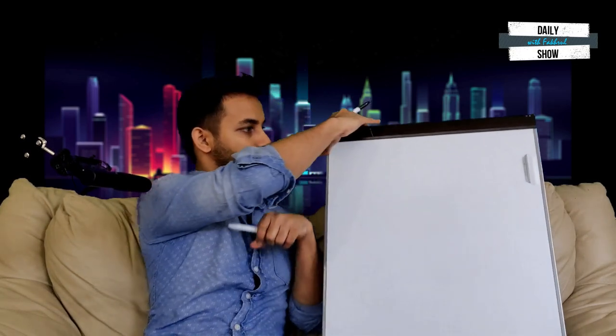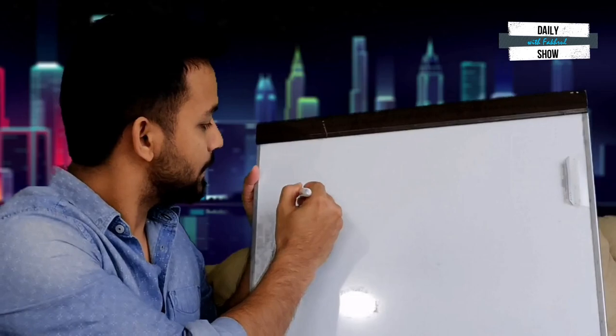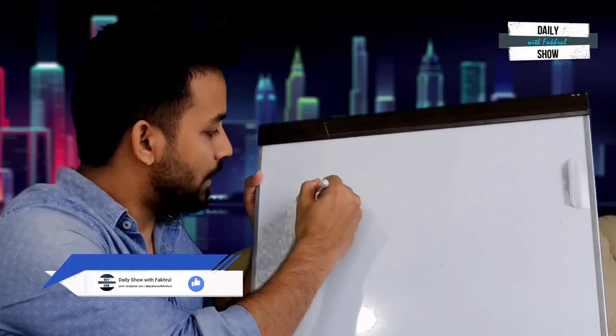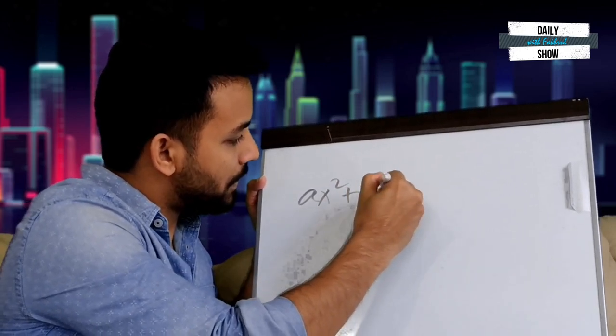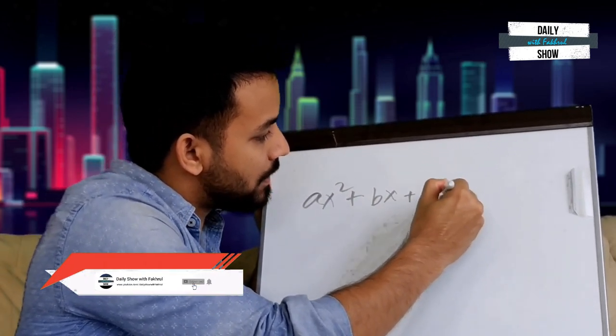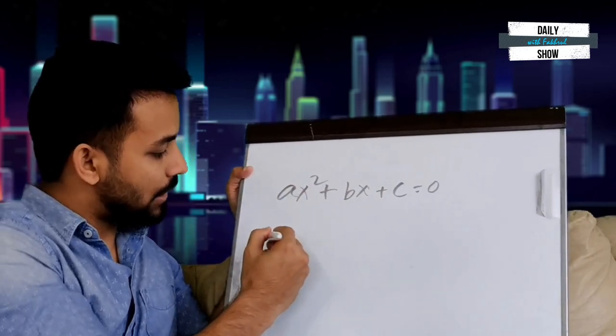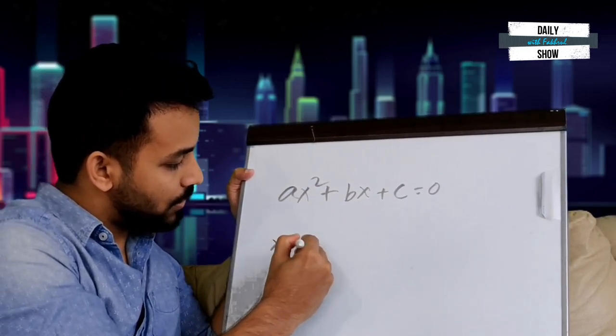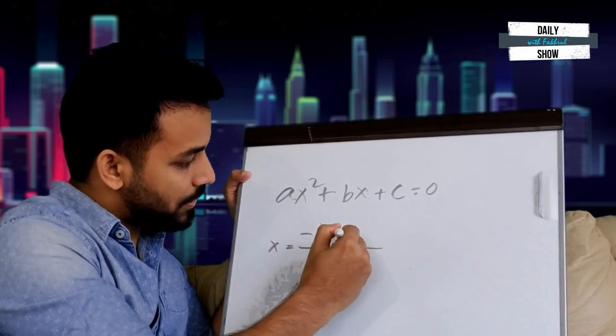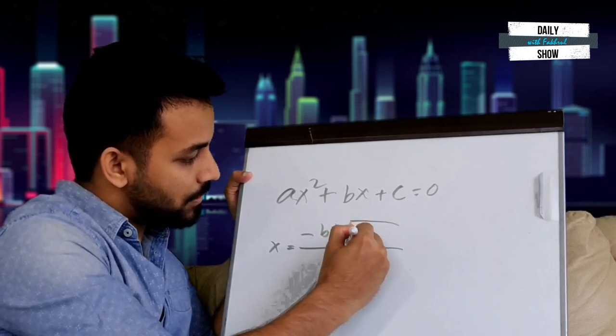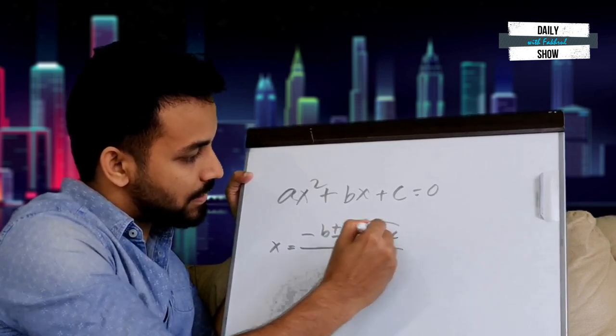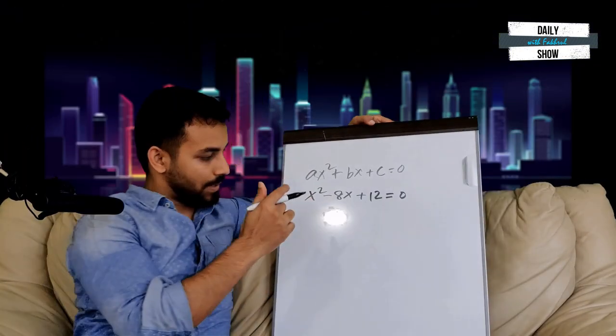Okay, I'm going to use our whiteboard. So I'm going to write the standard form of quadratic equation: ax squared plus bx plus c equals zero. The usual formula is x equals minus b plus minus root over b squared minus 4ac over 2a.